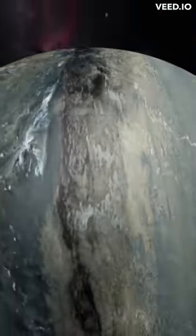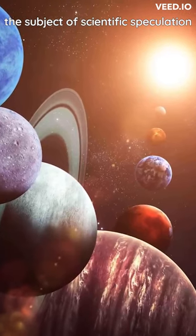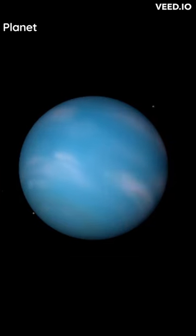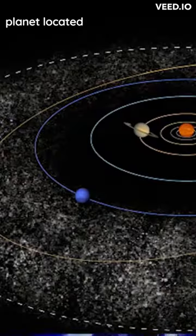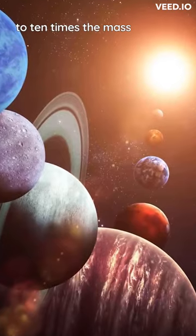Have you ever heard of Planet X? It's a hypothetical planet that has been the subject of scientific speculation for decades. Planet X is believed to be a massive planet located beyond the orbit of Neptune. Some scientists think it could be up to 10 times the mass of Earth.